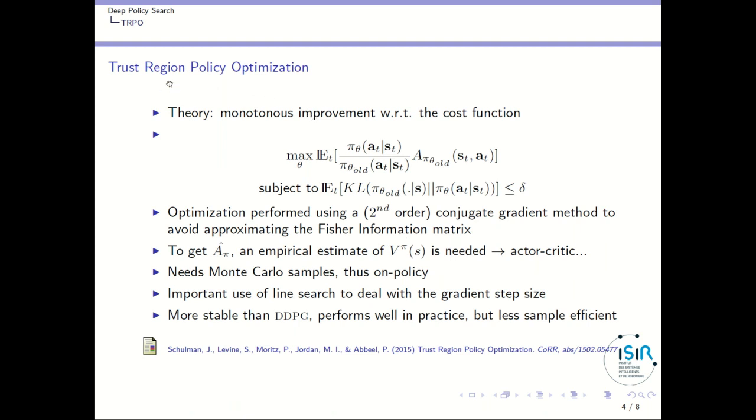So once we have added the trust region concern into the previous optimization problem, we have the optimization problem that we want to maximize to find the argmax over theta of this expectation. But we add the constraint that the KL divergence between the old policy and the current policy should stay inferior to a parameter delta. So how can we solve such an optimization problem? In fact, in the TRPO algorithm, John Schulman uses a conjugate gradient method.